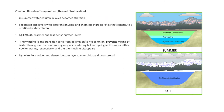Zonation based on temperature involves thermal stratification. In summer, the water column in lakes becomes stratified, separated into layers with different physical and chemical characteristics. The epilimnion consists of warmer and less dense surface layers. The thermocline is the transition zone from the epilimnion to the hypolimnion and prevents mixing of water throughout the year; mixing only occurs during fall and spring as the water either cools or warms and the thermocline disappears. The hypolimnion consists of colder and denser bottom layers where anaerobic conditions prevail.